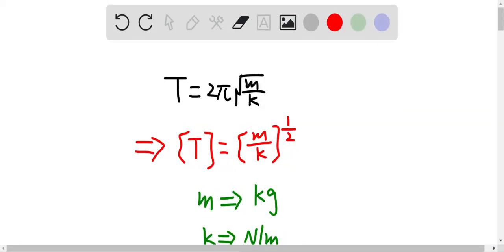The time period can be equal to 2π times square root m over k. So therefore, the time period T here should have a dimensional formula, which is m over k to the power of one half.